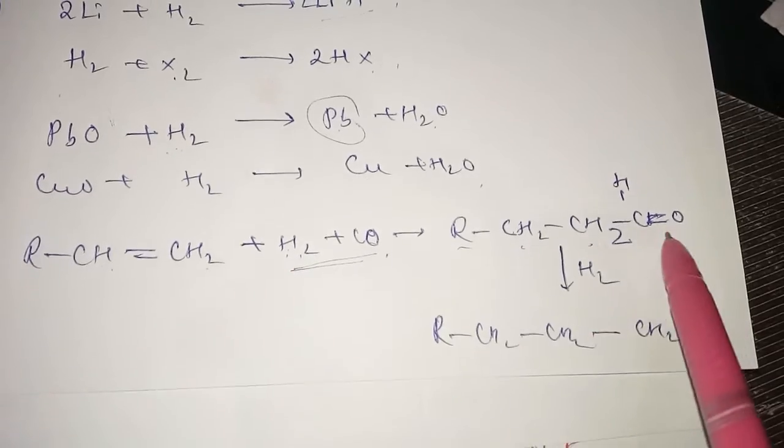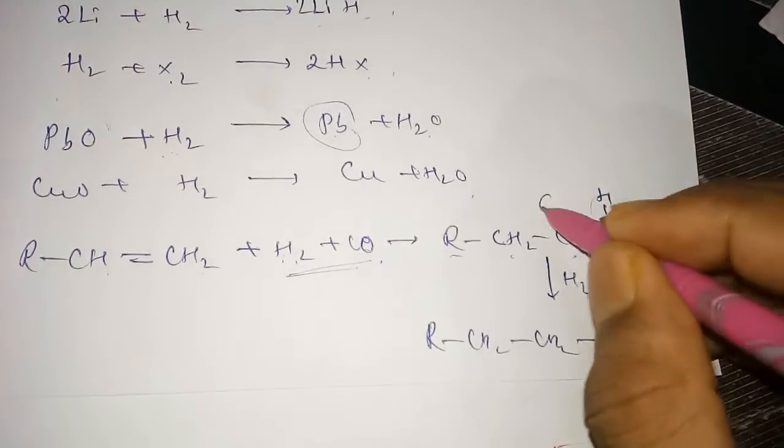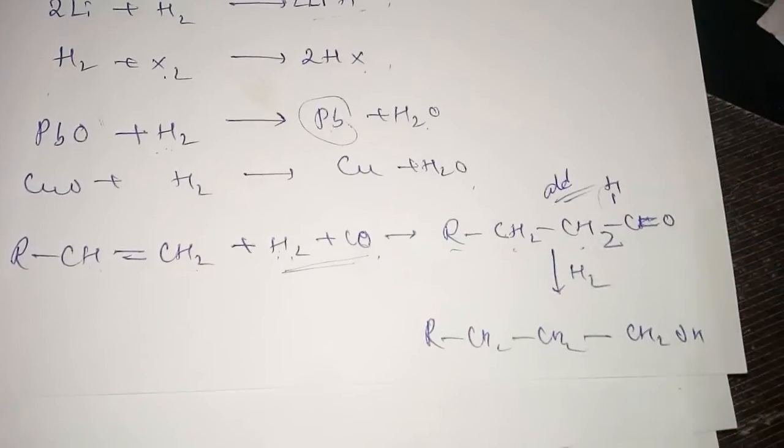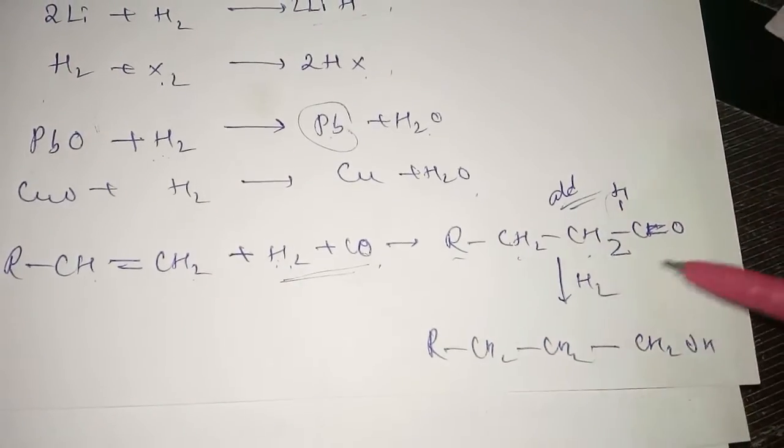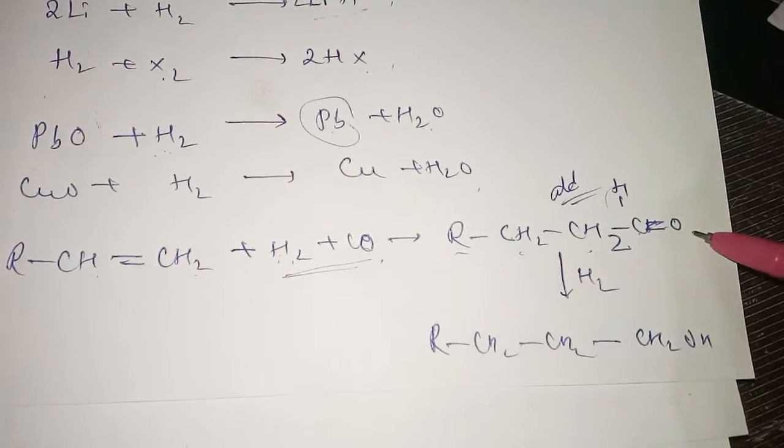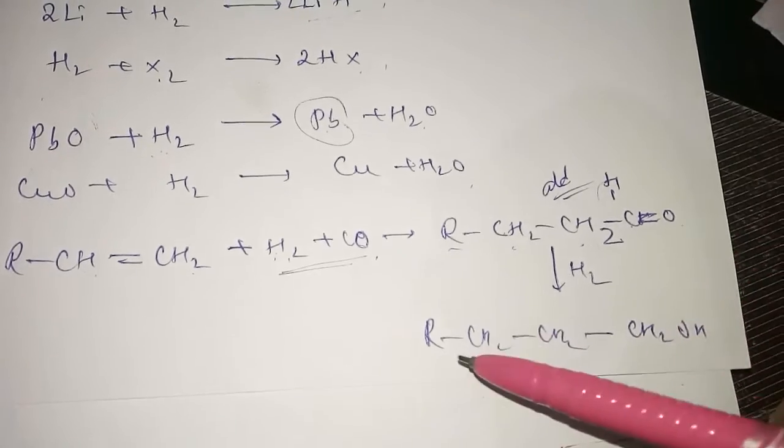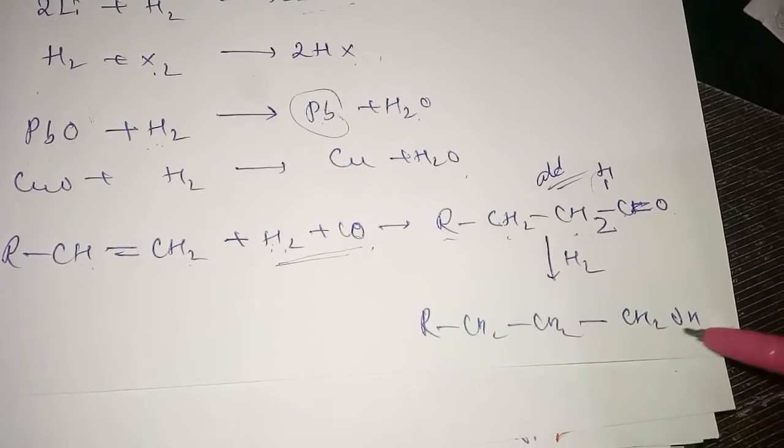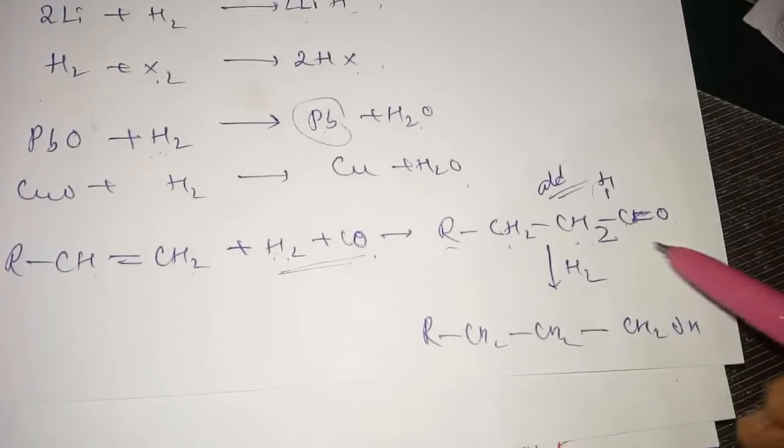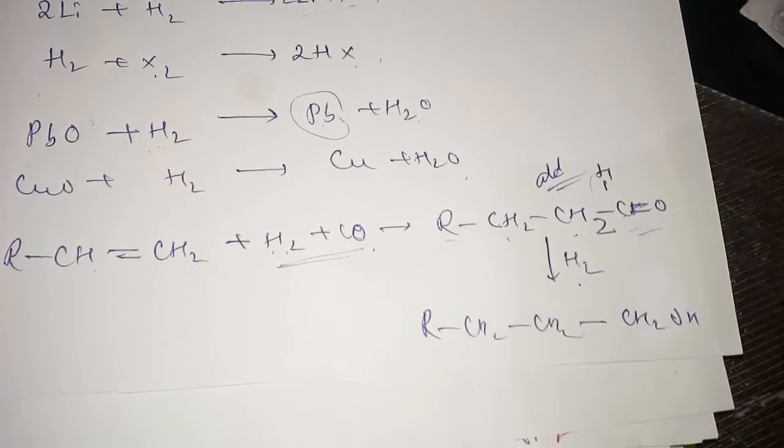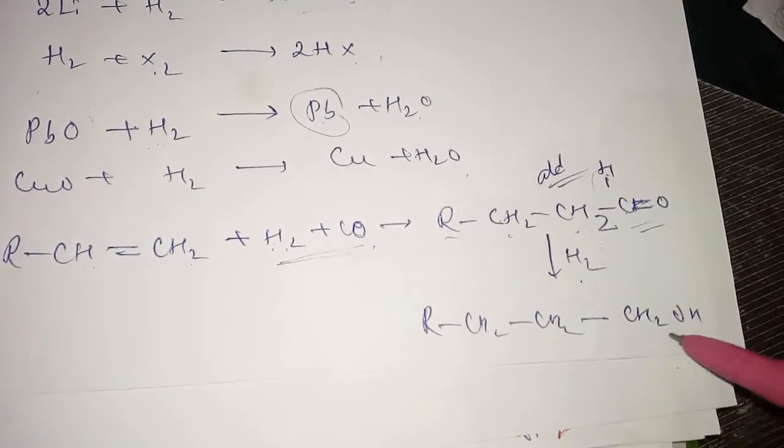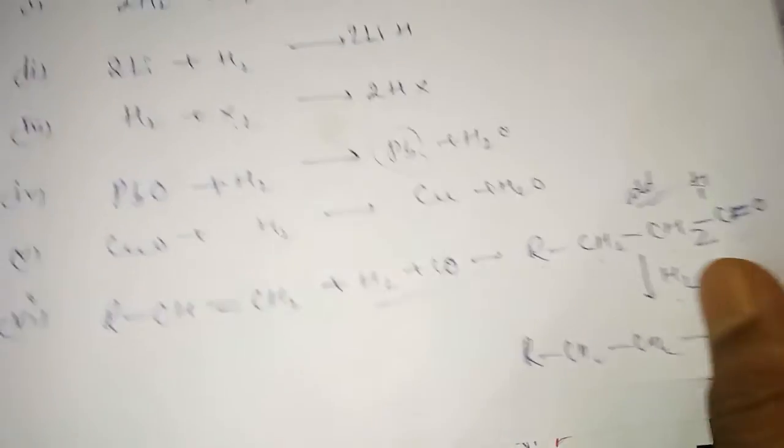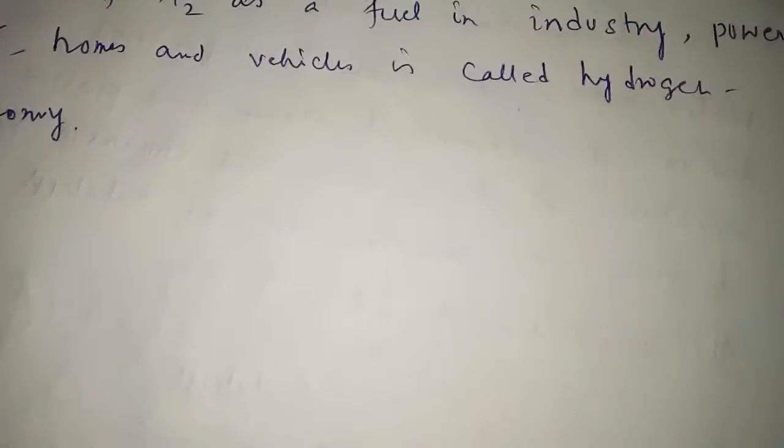This aldehyde reacts with hydrogen. One hydrogen goes to this carbon, one hydrogen goes to this carbon, forming RCH2CH2CH2CH2OH. From aldehyde by reduction we are getting alcohol.